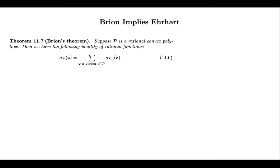I already announced that I will use Brion's theorem. So, let me remind you, here's the statement. We have a rational polytope. And then Brion says that we can write the integer point transform of P as the sum of the rational functions representing the integer point transforms of the vertex cones.